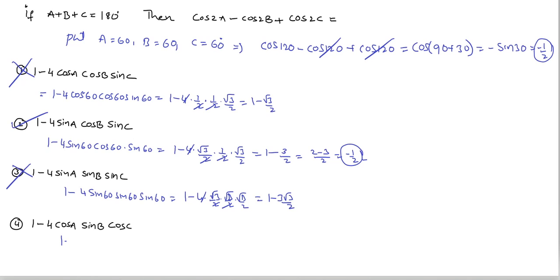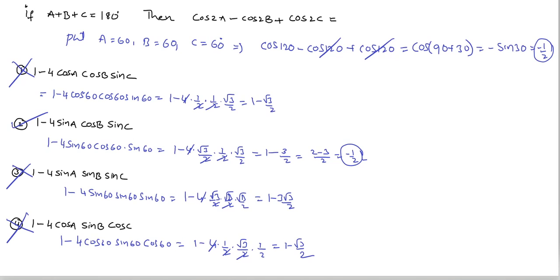The fourth option is 1 minus 4 cos a into sin b into cos c, that is 1 minus 4 into cos 60 (1/2) into sin 60 (root 3 by 2) into cos 60 (1/2). The 4 cancels, giving 1 minus root 3 by 2. This is not equal to minus 1 by 2, so the fourth option is also wrong. Therefore the second option is the correct answer.